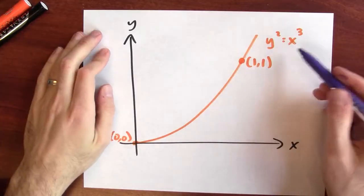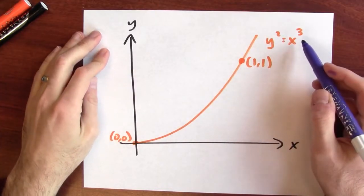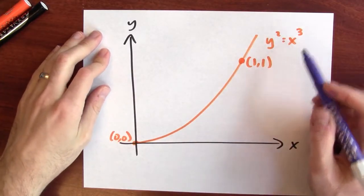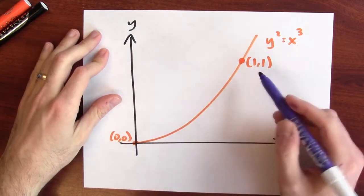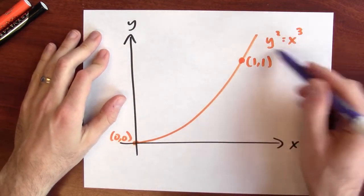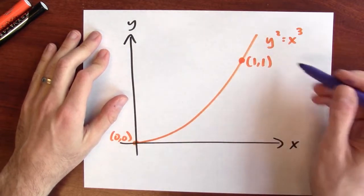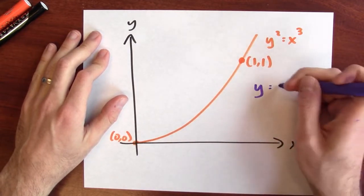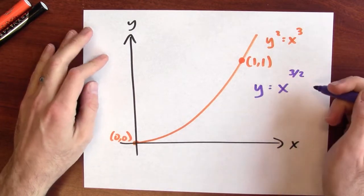Let's apply this to a specific problem. Let's compute the arc length of a little piece of a graph. We'll look at the graph of y squared equals x cubed and figure out the length of this arc from (0,0) to (1,1). I could rewrite this equation — instead of writing y squared equals x cubed, I could write y equals x to the 3 halves power.